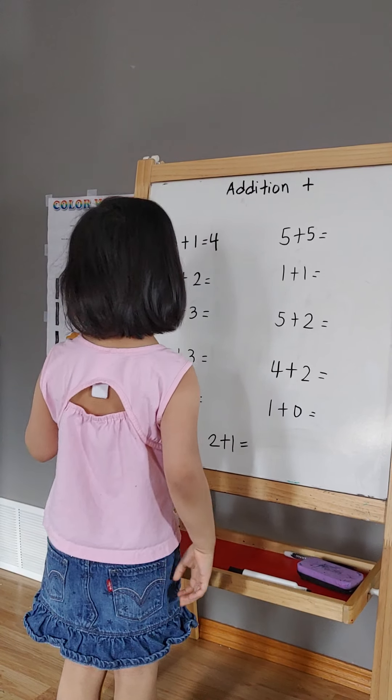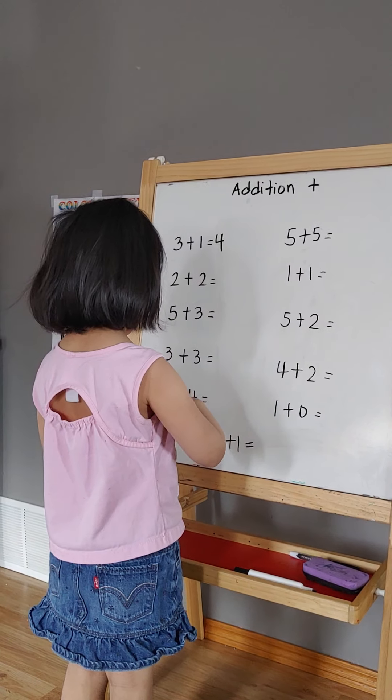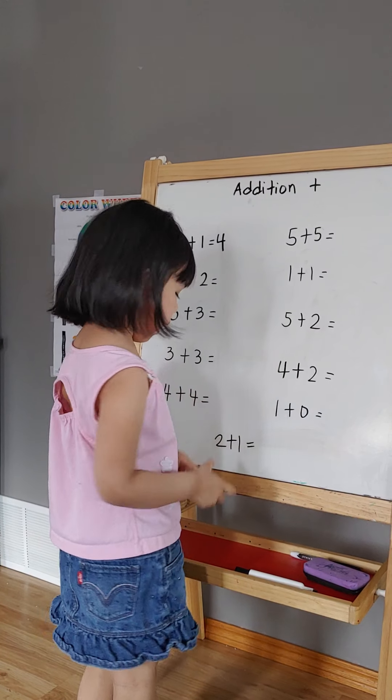2 plus 2. So put 2 on my finger and put 2 on my other finger. So count that. 1, 2, 3, 4. 4.